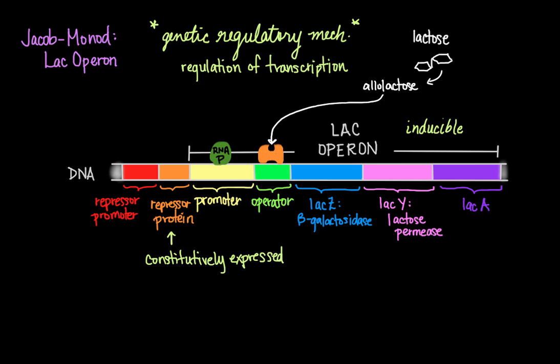This produces lactose permease, which allows more lactose to enter the cell, and more beta-galactosidase, which can break down lactose into galactose and glucose to be used for the cell's basic metabolic needs.